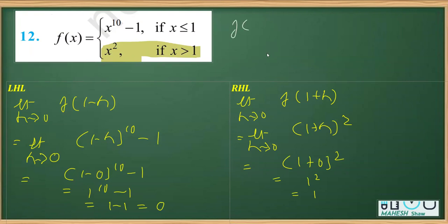For f(1), we use the first definition here, which is x less than or equal to 1. We can replace x with 1. So we are going to get 1 raised to the power 10 minus 1, which is equal to 0.